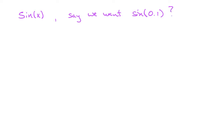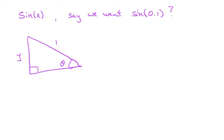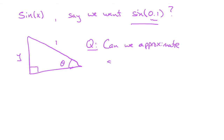One thing we could do is go back to the definitions of sine: draw a right triangle with angle theta, and work from there. But the problem we run into is the value at which we want to calculate it might not be an easy value, so how do we actually come up with the true value of sine of 0.1?